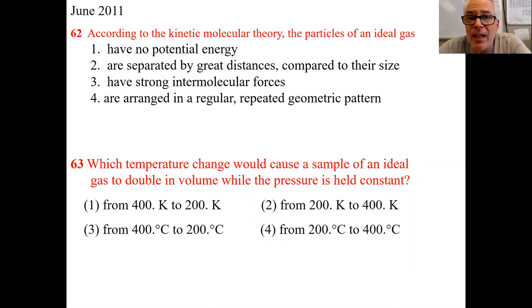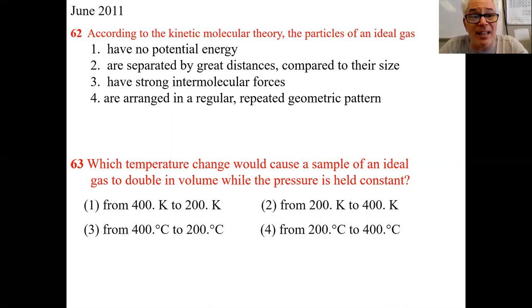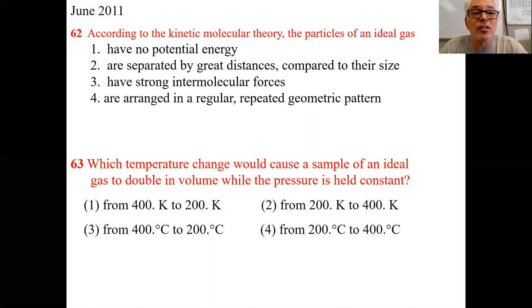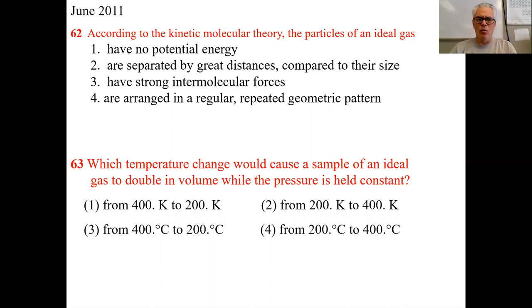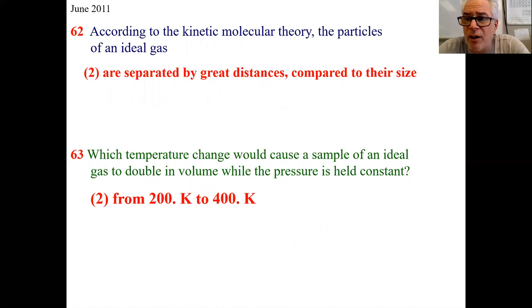Some Regents questions now. According to the KMT, the particles of an ideal gas are separated by great distances compared to their size — that's the answer. Not 'no potential energy,' not 'strong intermolecular forces,' and not 'arranged in a regular repeated geometric pattern' (that's a solid). Next question: which temperature change would cause a sample of an ideal gas to double in volume while pressure is held constant? We want double the volume, pressure is constant, so temperature must also double. Temperature goes from 200 K to 400 K — that doubles it. Separated by vast distances compared to their size.